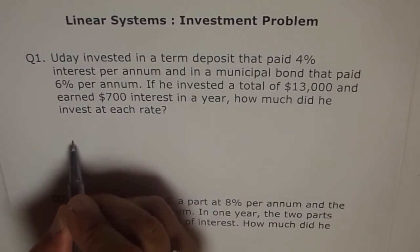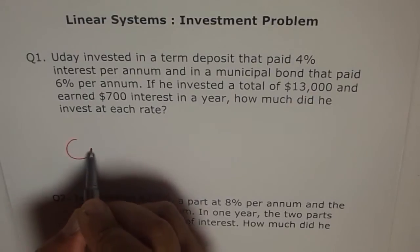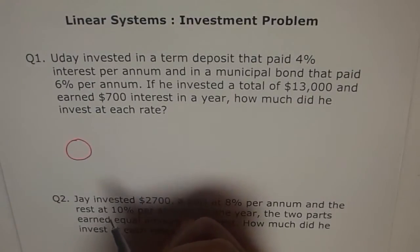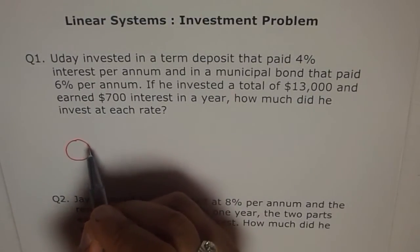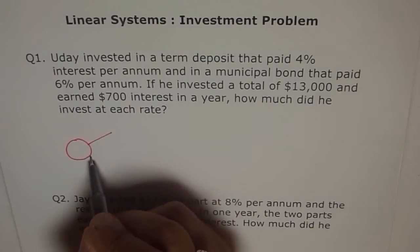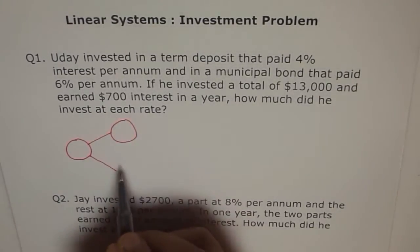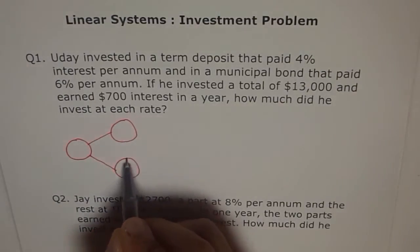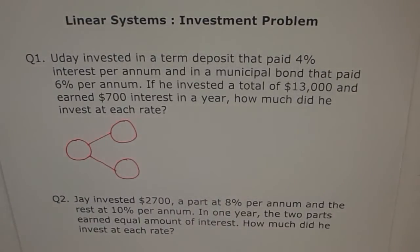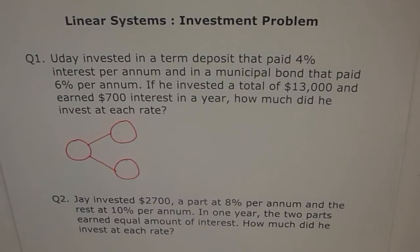We will say, let's say, you start with $13,000. This is our $13,000. And this investment is made in two places. One is here and the other one is here. Now, here, how much are the investments?